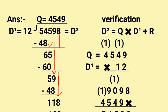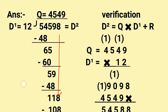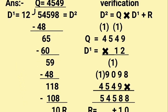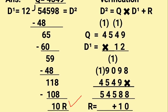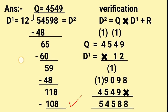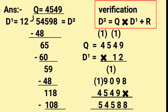Now 8 comes down, it becomes 118. We know 12 nines are 108. Let's subtract. This gives us 10 remainder.